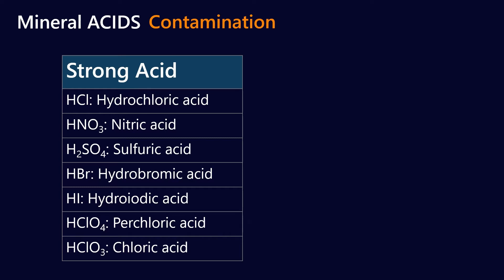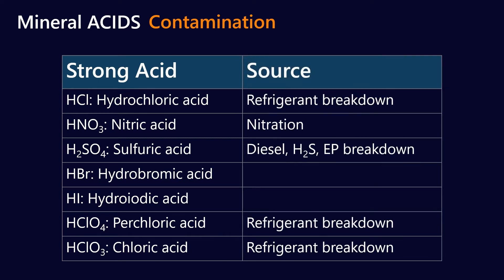Now in lubricants, where do these strong acids come from? Hydrochloric acid can come from the breakdown of refrigerants. Nitric acid, you'll see as a byproduct of nitration, which can be a problem in gas engines. Sulfuric acid is probably the most common one. So diesel contains usually a small amount of sulfur. You might have contamination of natural gas with H2S. And we also get a breakdown of EP additives, which usually contain sulfur in them. So ZDDP is a classic example, that has sulfur in it. But also a lot of the industrial lubricants, even when they're ashless, still contain sulfur in them. Not only that, but the base oils also contain sulfur. So mineral base oils, particularly the group ones, have some sulfur in them. And then you've got perchloric and chloric acid, which can also be the breakdown of refrigerants.